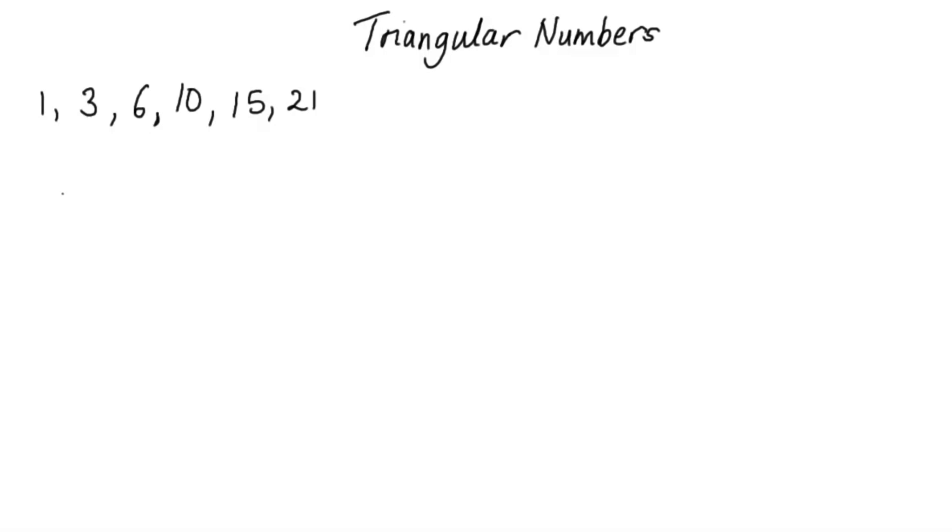These are the first six triangular numbers, and they're formed by taking the position and summing all the numbers from 1 up to the position.